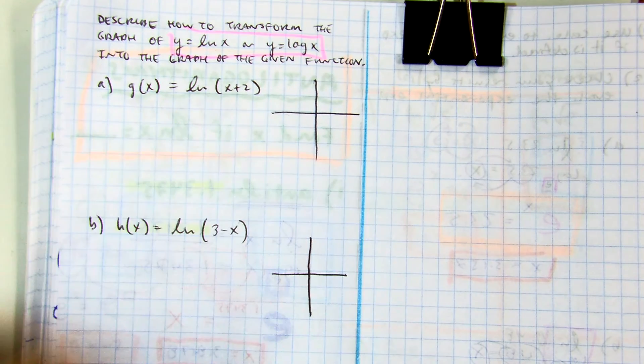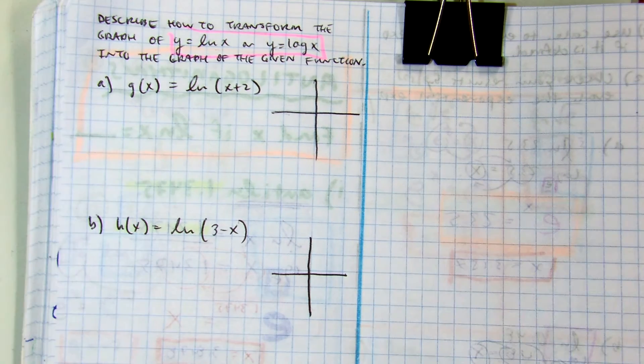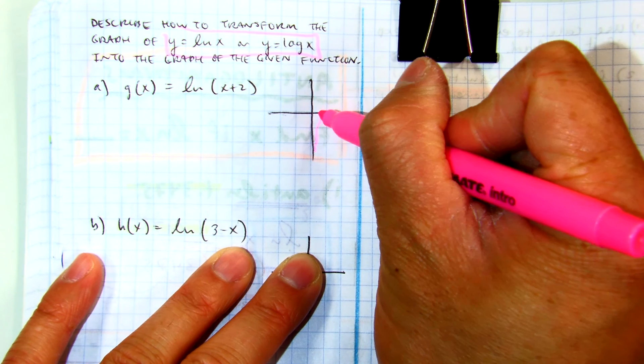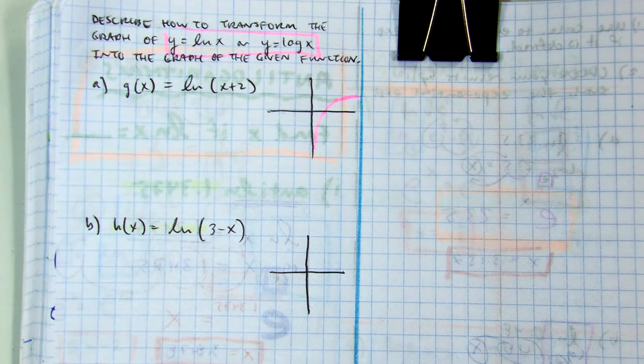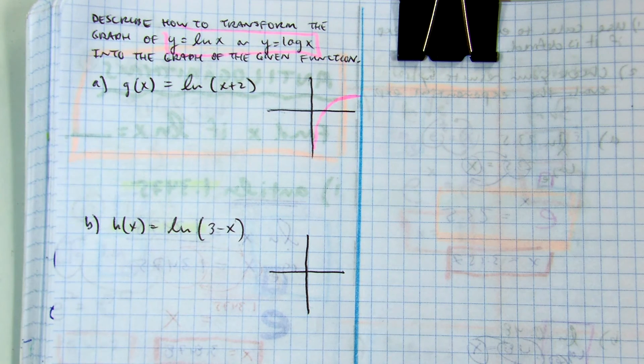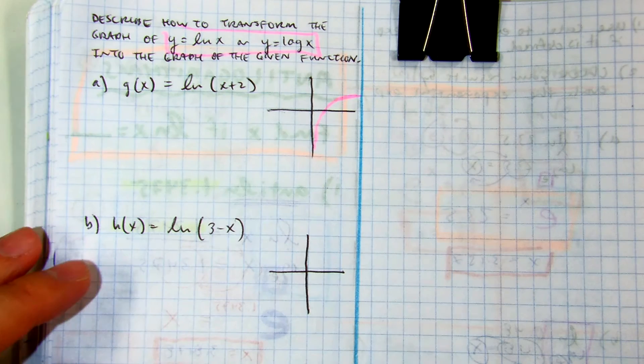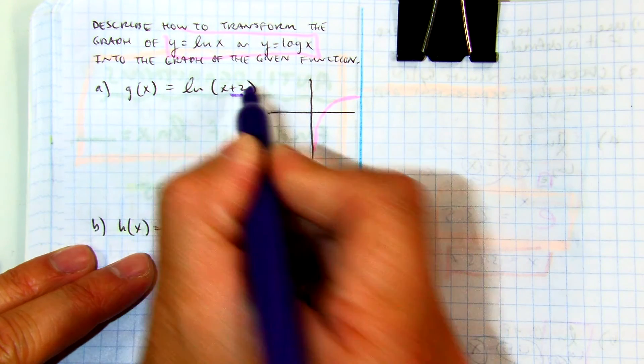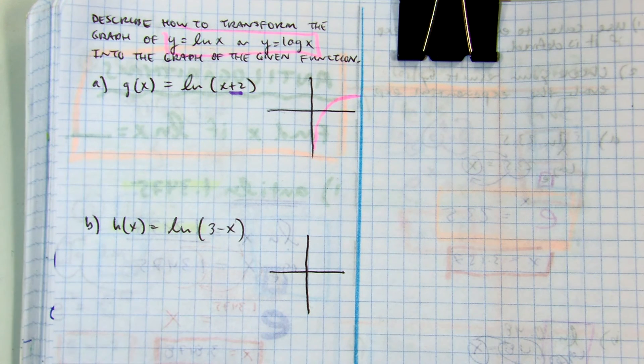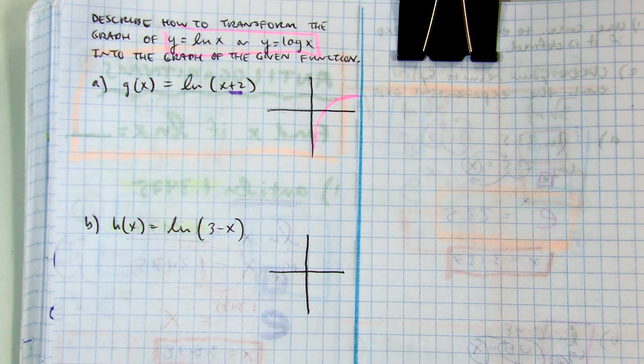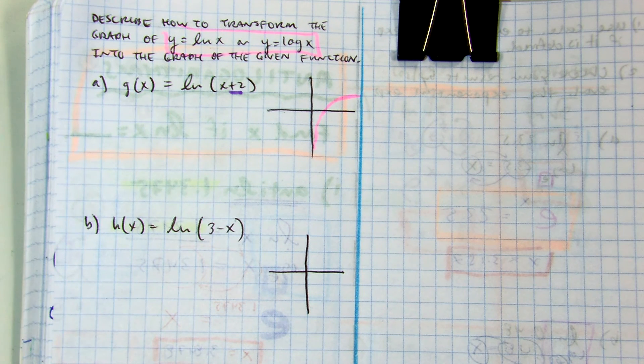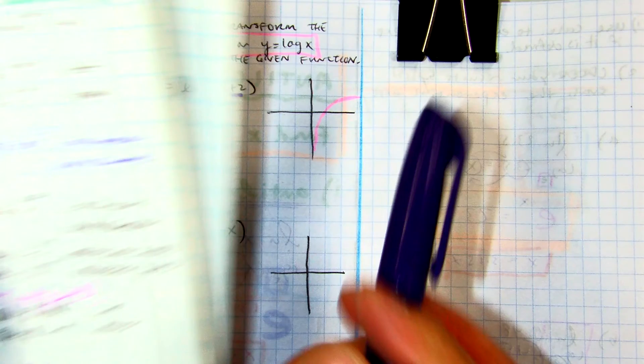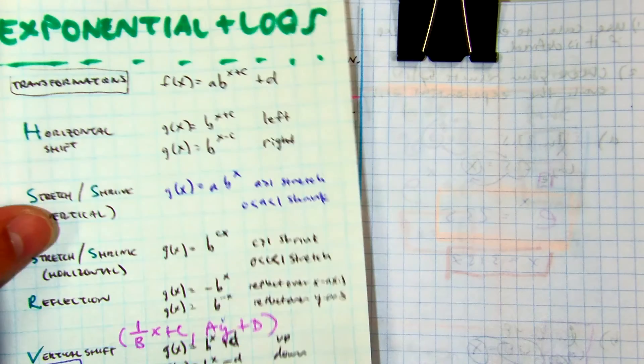Let's go ahead and sketch the red one. So there is the parent graph. Identify where your plus 2 is. Class, is that on the inside or outside? Inside. Is it the letter A, B, C, or D? It is a C, or what I call a C. It's basically to the right of the variable. And then there you have a horizontal shift.